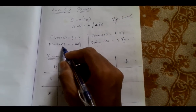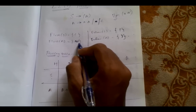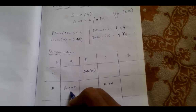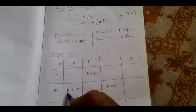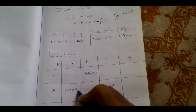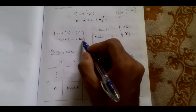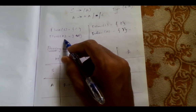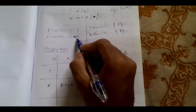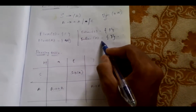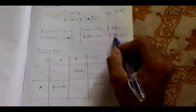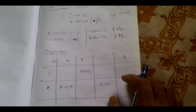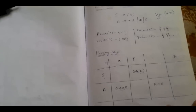Coming to the first of A, we have 'a' and Epsilon. For A in the 'a' column, we write the production A → small a capital A, since it generates small 'a'. Then, because first of A contains Epsilon, we go to the follow of A. The follow of A contains closing bracket, so in the closing bracket column we add the production A → Epsilon. This is the mechanism for building a parsing table for the LL1 grammar.